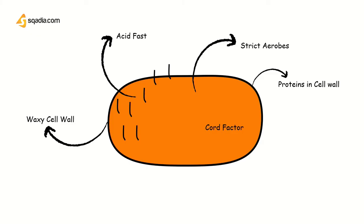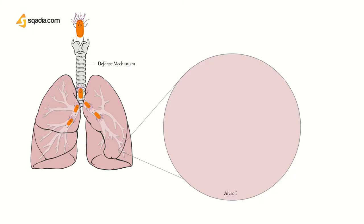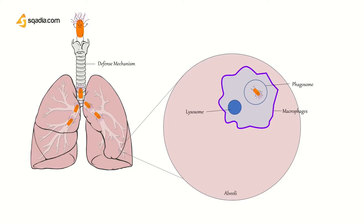When mycobacterium enters the lungs of an individual, it is engulfed by the alveolar macrophages. These alveolar macrophages form a phagosome around it. In normal individuals, this phagosome gets attached to the lysosomes and the bacteria is engulfed and destroyed. But here, cord factor is produced, which prevents the attachment of this phagosome to the lysosome. So these bacteria escape the microbicidal activity of the alveolar macrophages and are ready to cause disease.